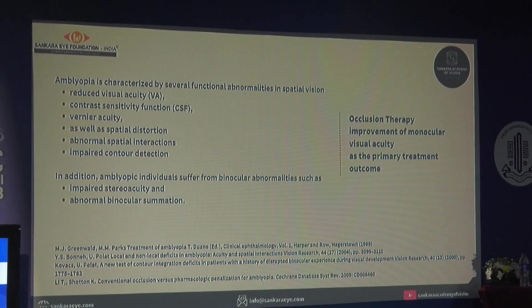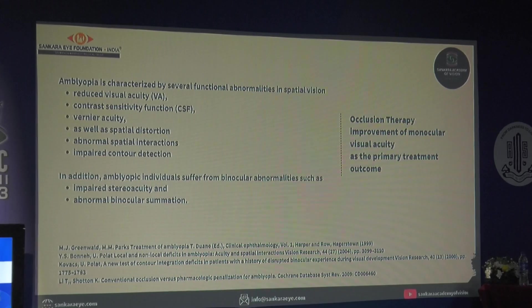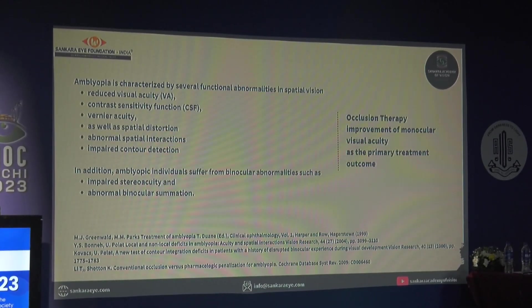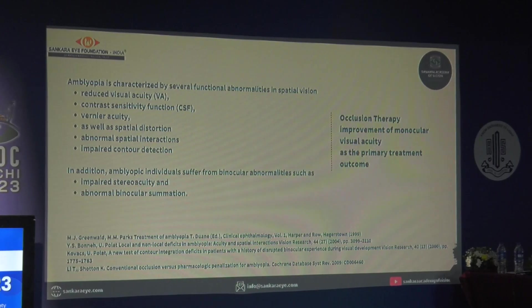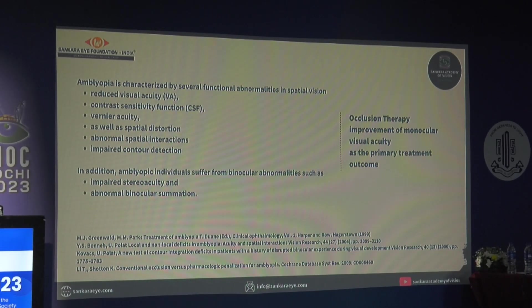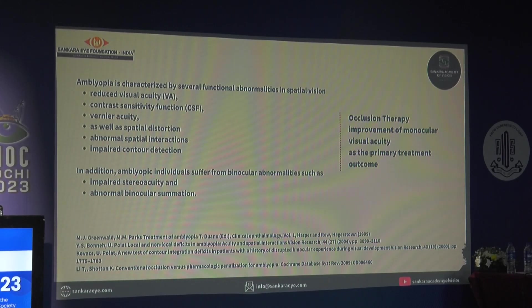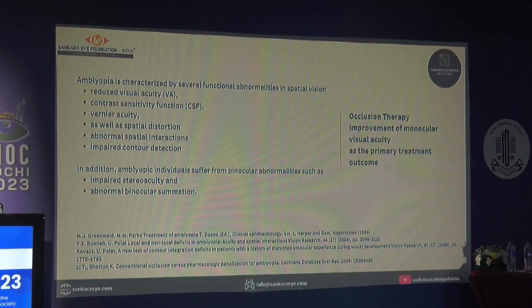I'm going to be talking about home and office-based therapy for amblyopia. Amblyopia is characterized by various functional vision abnormalities: reduced visual acuity, lost contrast vision, lost vernier acuity, and distortions in spatial orientation — what we crudely call hand-eye coordination. In addition, patients suffer from binocular abnormalities such as impaired stereo acuity and impaired binocular summation.